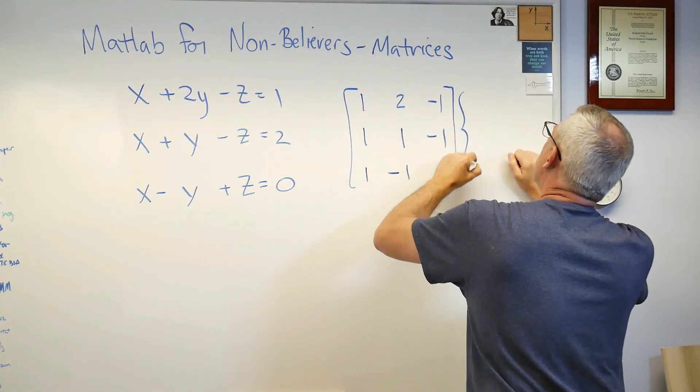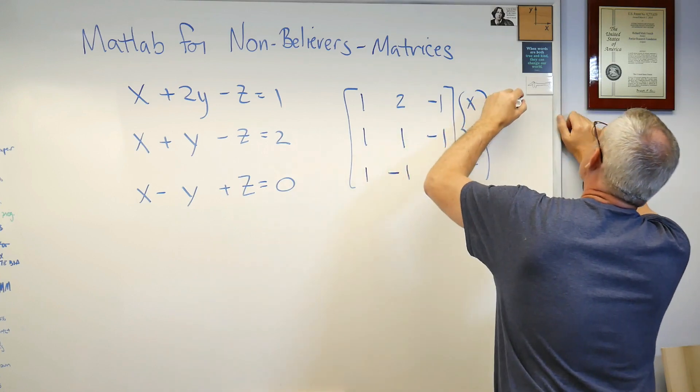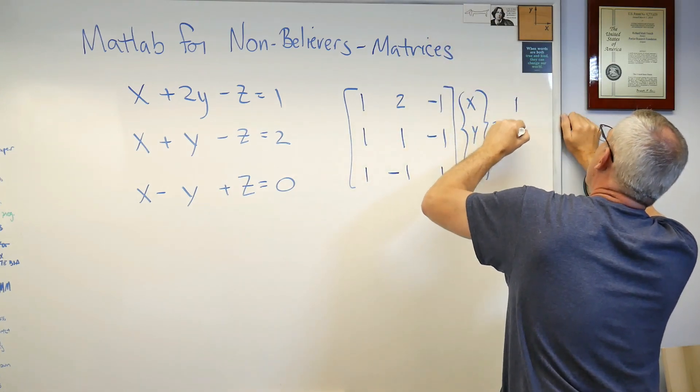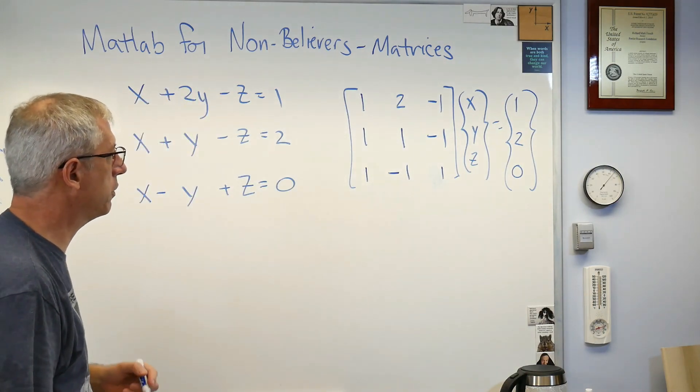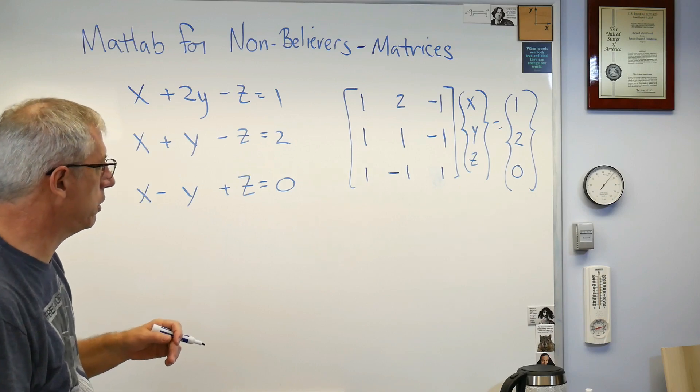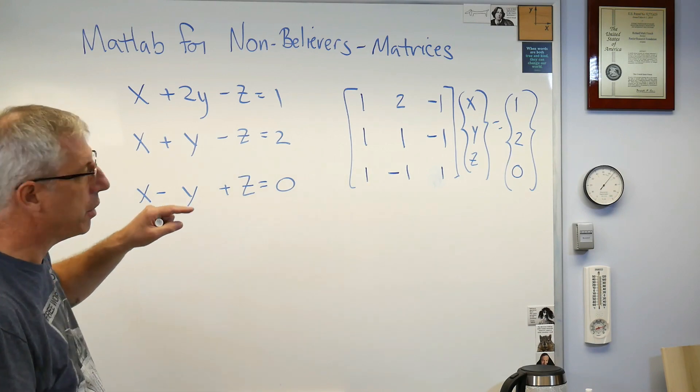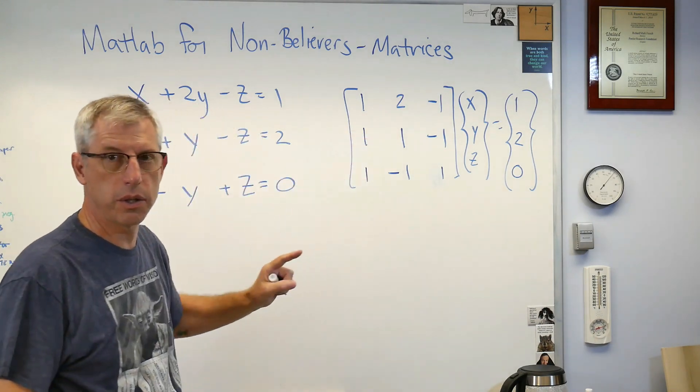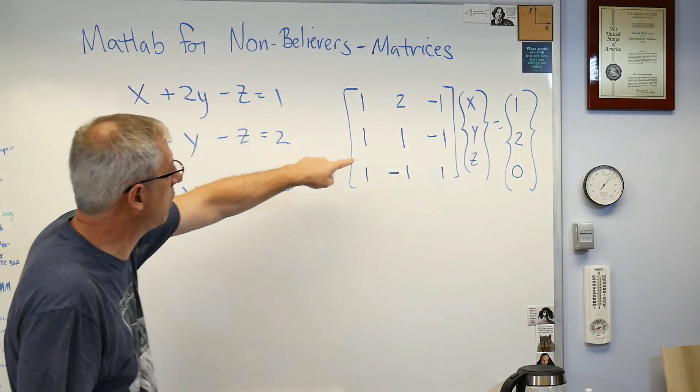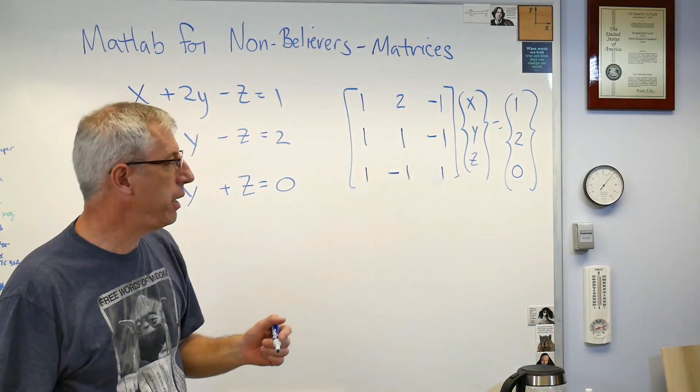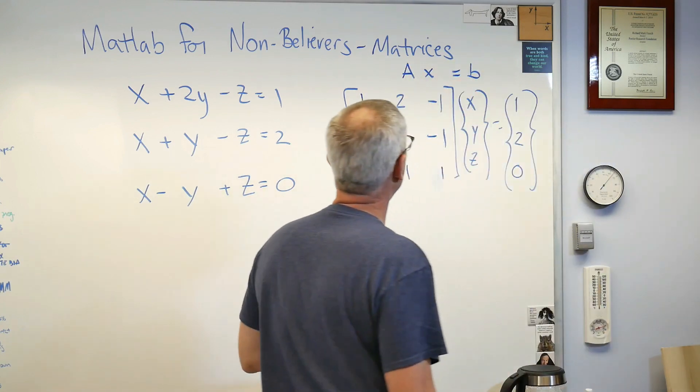X Y Z we have to equal something: 1 2 0. That's how you write that problem out in matrix form. But for right now, matrix form really is just sort of a notational thing. It's much more than that. Linear algebra is a whole field of study in mathematics, but all you need to understand right now is this and this are the same thing. One two zero right there, and all these coefficients appear in that matrix. That's a matrix, a vector, and a vector.